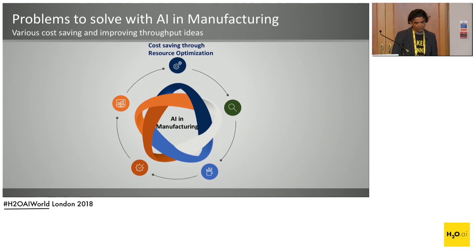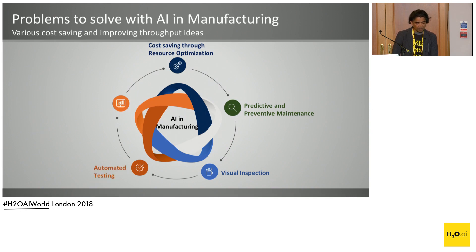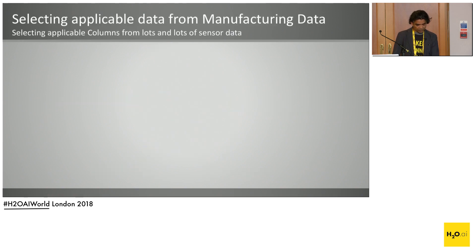The areas we are focusing on using machine learning to help our manufacturing partners are: cost saving, preventive and predictive maintenance, visual inspection, automated testing, and quality assurance. These are the five key areas where we are trying to use machine learning including Driverless AI to solve our customer problems.